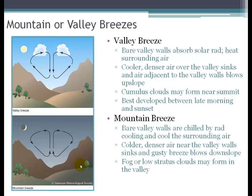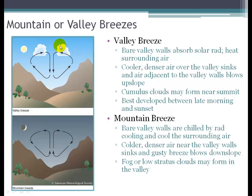Mountain and valley breezes occur where we have a valley defined by surrounding mountains. The valley breeze happens because the bare valley walls get really hot — they absorb solar radiation. On the mountains, air pressure decreases as we rise, so we have relatively lower pressure at the mountaintops. The hot air forming inside the valley drifts up toward those lower pressure areas, creating a valley breeze that goes up the side of the mountain. To complete the circulation pattern, the colder mountain air sinks down while the breeze blows up along the valley edge.